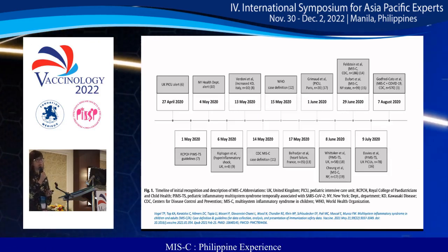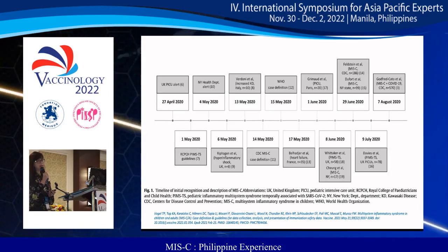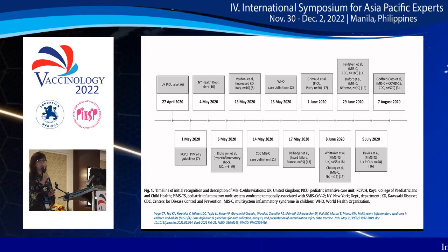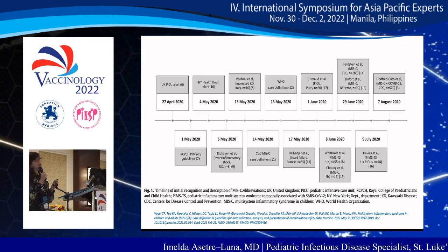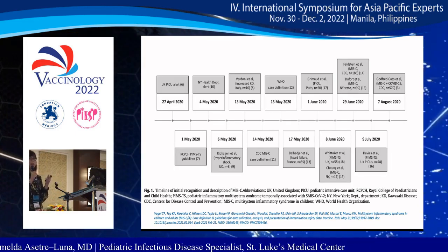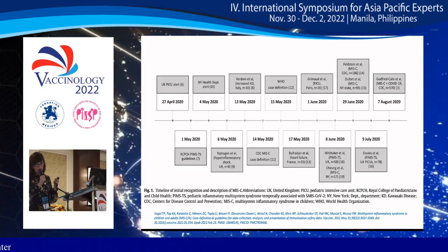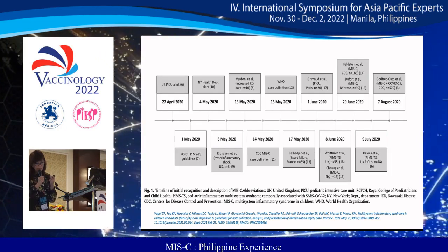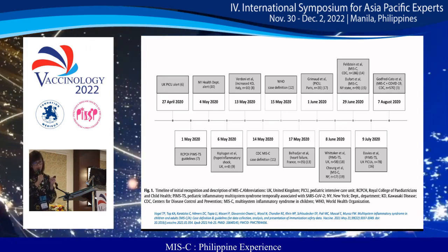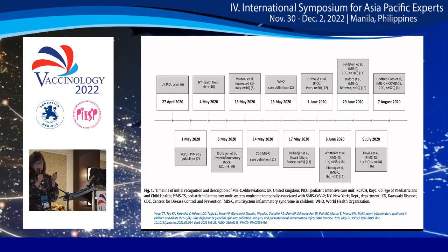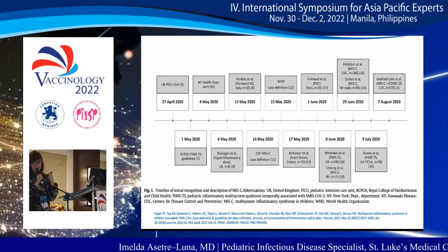This is the history of MIS-C. It was first recognized in April of 2020 in the United Kingdom, when some pediatric intensivists noted several critically ill children developing hyper-inflammatory syndrome, very similar to Kawasaki disease, but these children had evidence of SARS-CoV-2 infection. They reported this to their society, the Royal College of Paediatricians and Child Health, and termed it pediatric inflammatory multi-system syndrome temporarily associated with SARS-CoV-2.